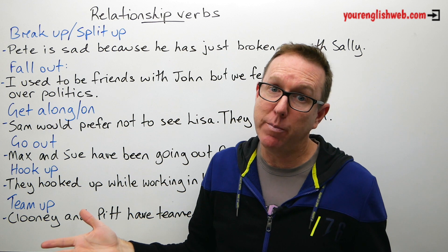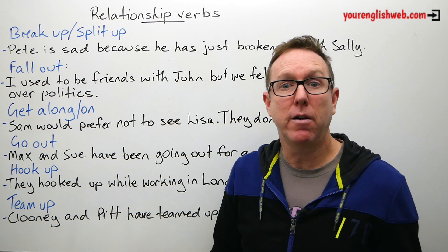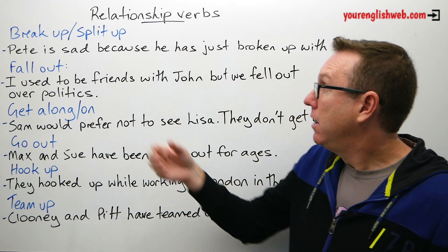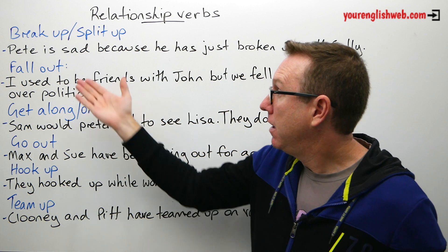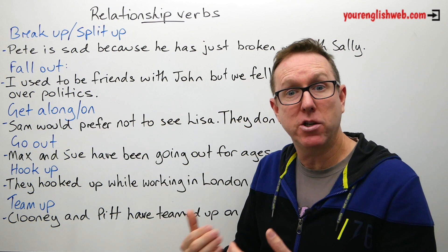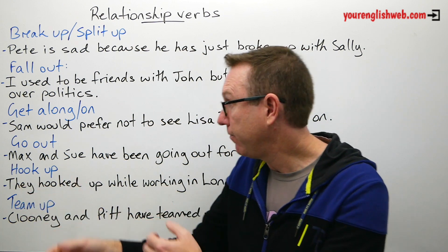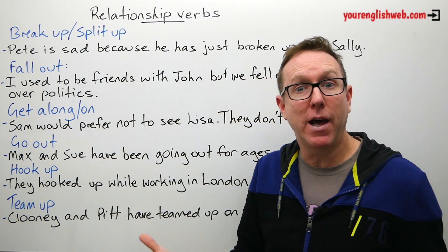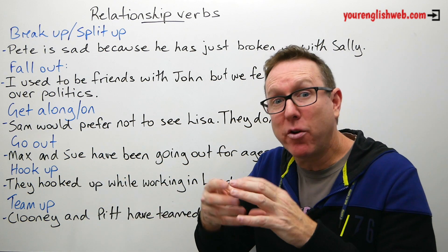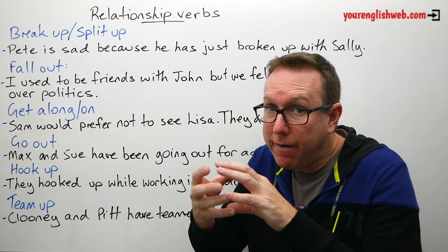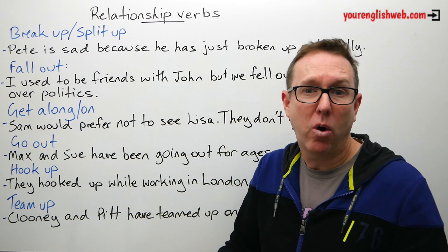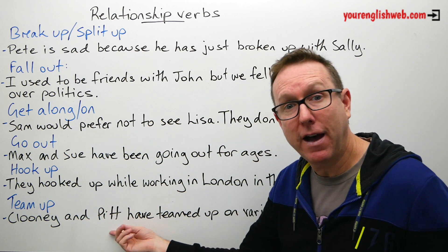So to recap: 'break up' or 'split up' — when you separate; 'fall out' — when you're no longer friends with someone; 'get along with' or 'get on with' — when you have a good relationship; 'go out with' — when you're in a romantic relationship; 'hook up' — when you first get together in a relationship; and 'team up' — when you collaborate or work together on a project.